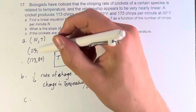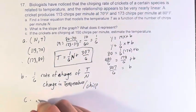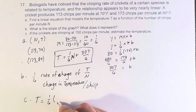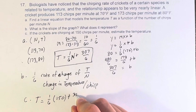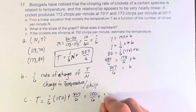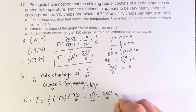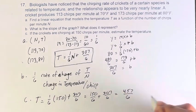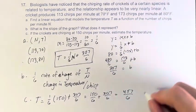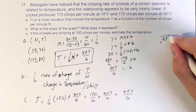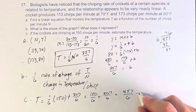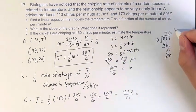And part c: the crickets are chirping at 150 chirps per minute, estimate the temperature. This is just T when N is 150. 1/6 times 150 plus 307 over 6. 150 over 6 plus 307 over 6 is equal to 457 divided by 6. We can just say 76 and 1/6 degrees Fahrenheit.